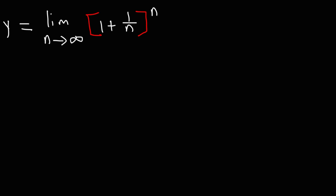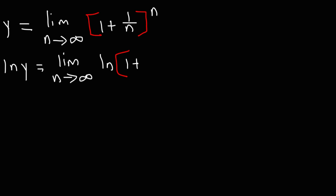The next thing we're going to do is take the natural log of both sides. So we're going to have ln y is equal to the limit as n goes to infinity of the natural log of 1 plus 1 over n raised to the n.